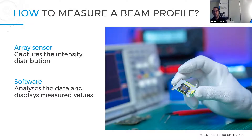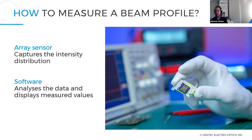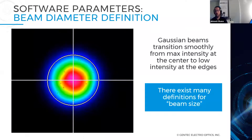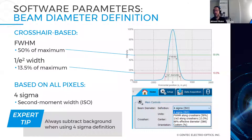So how to measure beam profile? Very simply, you need an area sensor to capture the intensity distribution, and you need the software — the software analyzes the data and gives you the information you need. I like to think of it as inputs and outputs. One key parameter is the beam diameter definition: for Gaussian beams there are different definitions, for example Full Width at Half Maximum (FWHM), 1/e² definition, and the four-sigma definition based on all pixels, which follows ISO standards and is most commonly used by our customers.